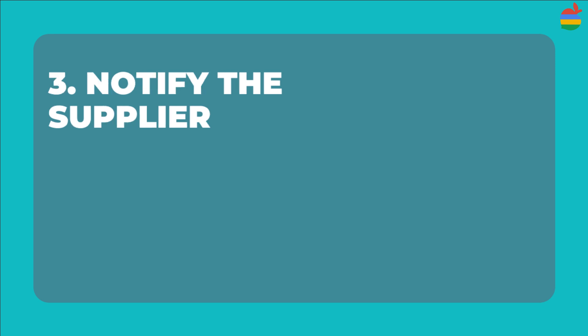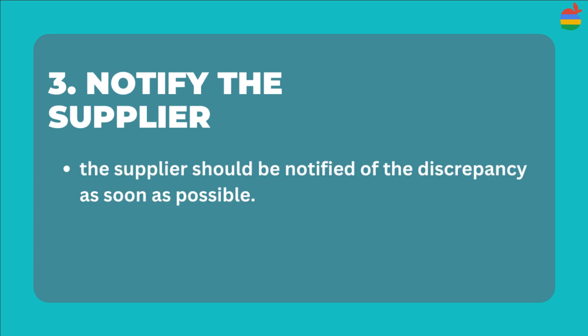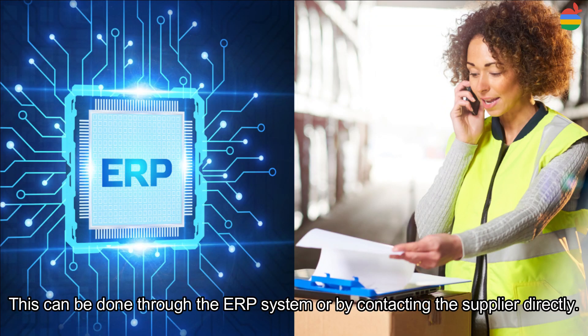Number three, notify the supplier. The supplier should be notified of the discrepancy as soon as possible. This can be done through the ERP system or by contacting the supplier directly.